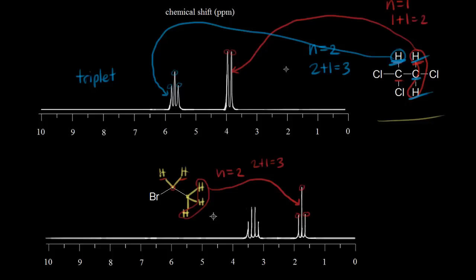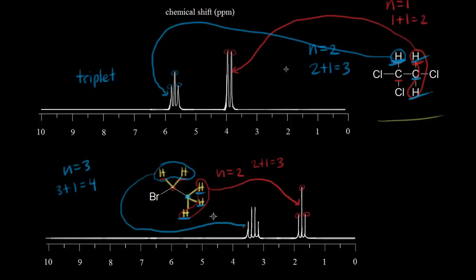Next, let's think about the signal for these two protons. How many neighbors do those two protons have? We go to the carbon next door — one, two, three neighbors. So n is equal to three. Three plus one is equal to four. We would expect a signal with four peaks for the protons in blue. And here's our signal with four peaks — one, two, three, and four. So we call this a quartet.